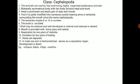The animals of class Cephalopoda are marine, fast swimmers, and highly organized. The body is bilaterally symmetrical and divisible into two parts: head and trunk. The head is prominent and bears the eyes and mouth. The foot is partially modified into muscular arms bearing suckers, with tentacles surrounding the mouth — hence the name Cephalopoda.